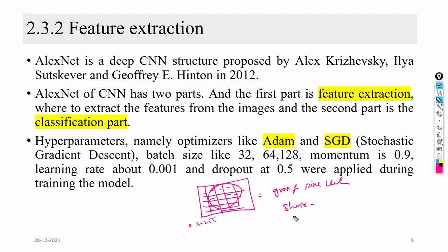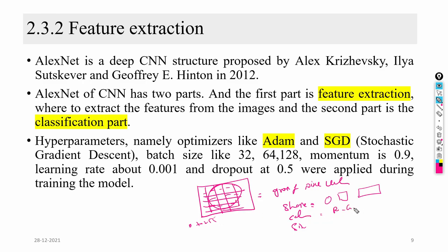Some pixel values are responsible for color — red, green, blue — some are responsible for shape — circle, rectangle, square — and some are responsible for size — small, medium, or large.